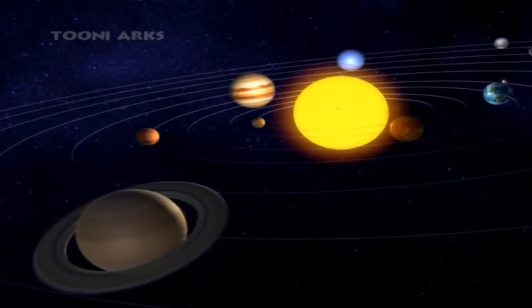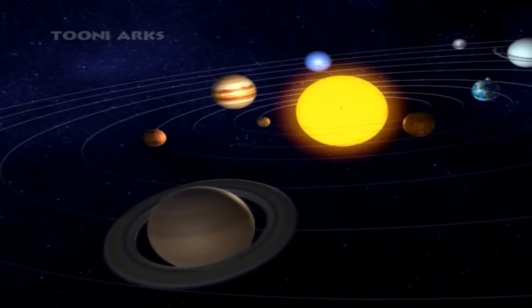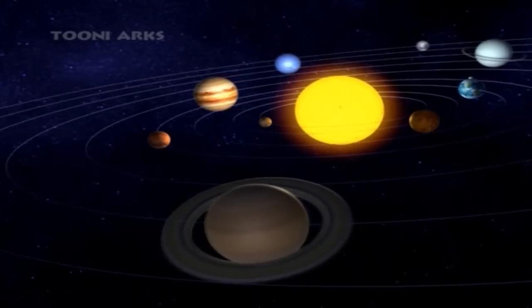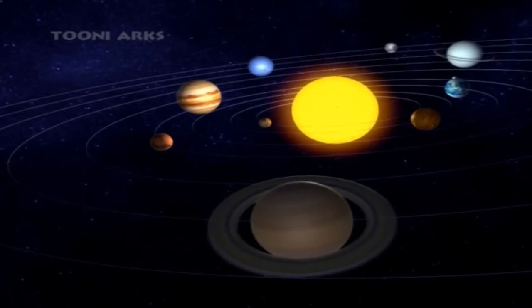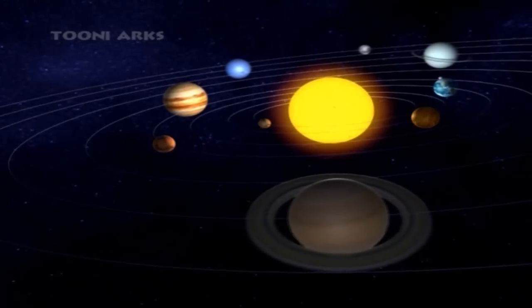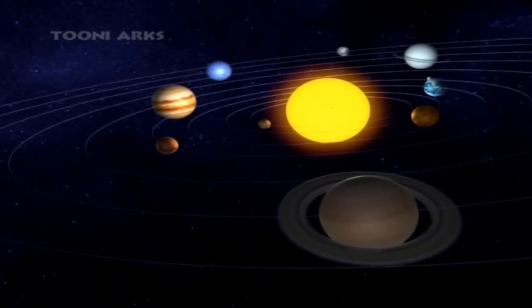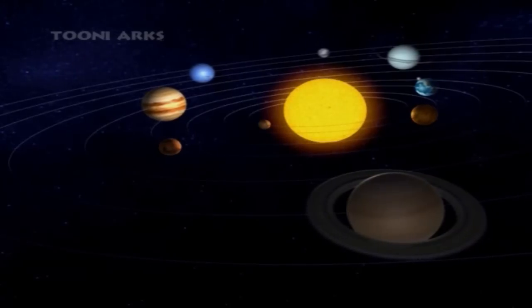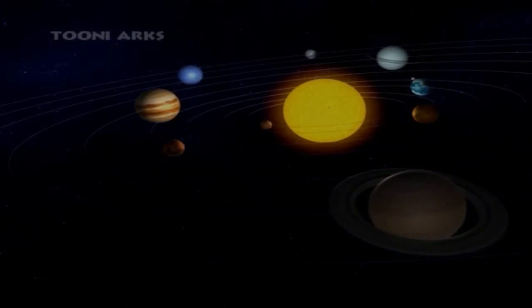These planets orbit around the Sun. In our solar system, we have eight planets. Our mother Earth is one of them and we all orbit around the Sun.